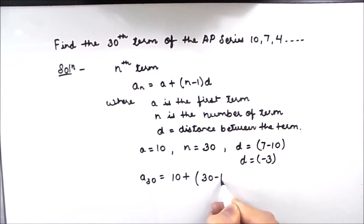This is equal to 10 plus 29 times negative 3, which is equal to 10 plus negative 87, and negative 87 plus 10 is equal to negative 77.